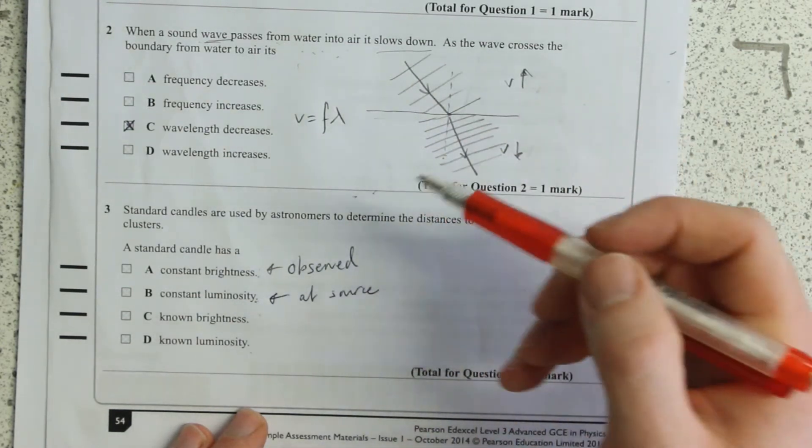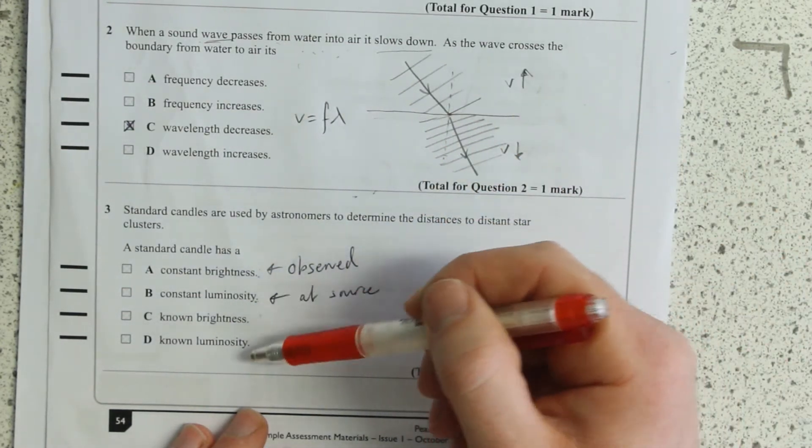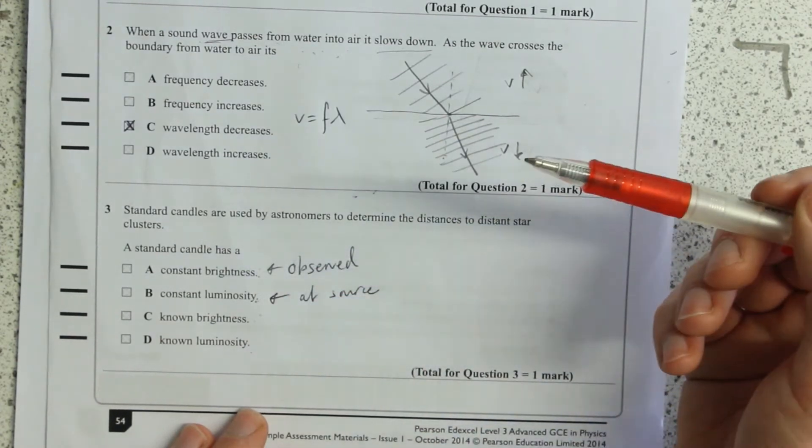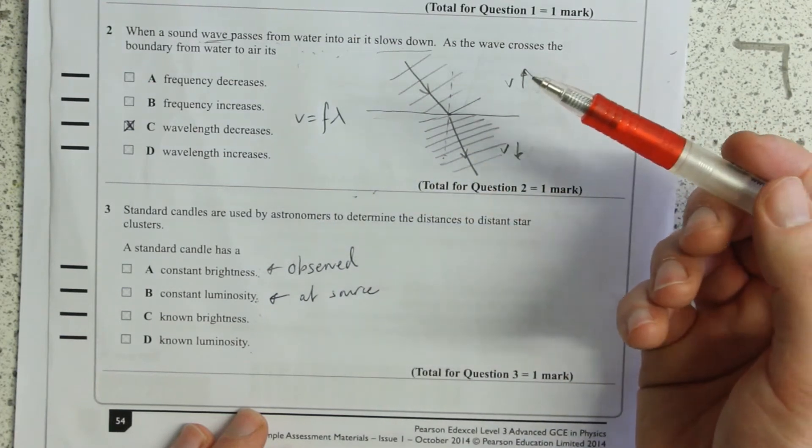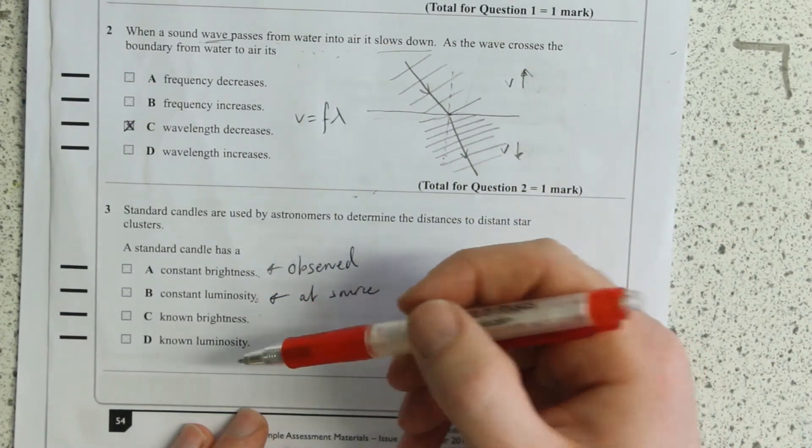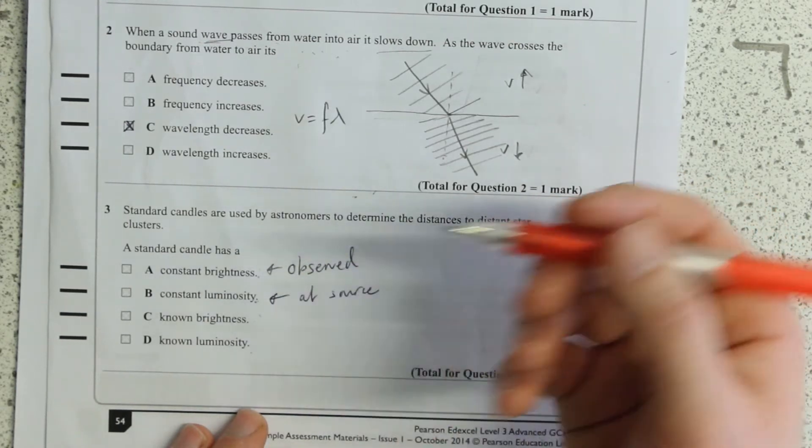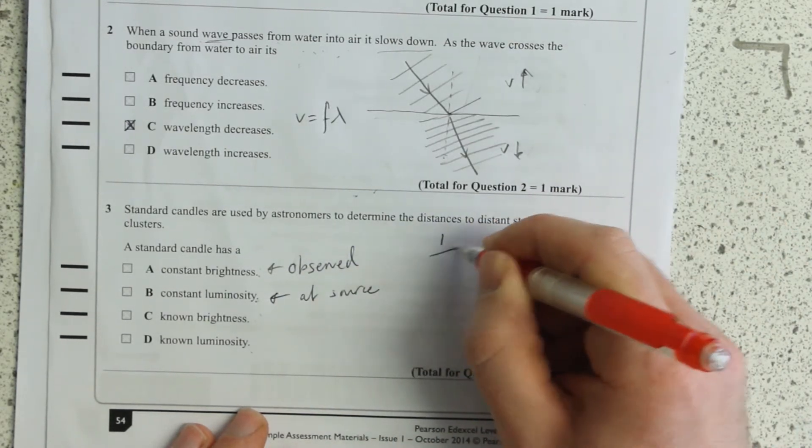Okay, well the standard candle has to be a luminosity at source. We measure the brightness here on Earth, and if we can work out the luminosity at source, we can therefore infer the distance because it follows a 1 over r squared, an inverse square law. The intensity which is the brightness.